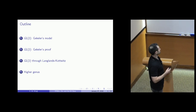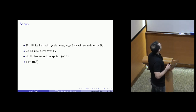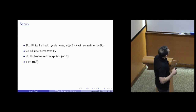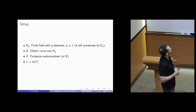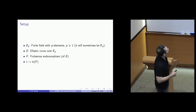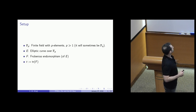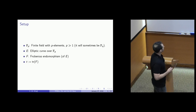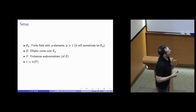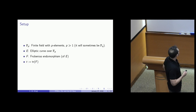The setup: I'll be working over a finite field with P elements, just for expository purposes. Sometimes it will be F_Q because I mistype P to Q. E will denote an elliptic curve over F_P or F_Q. F will be the Frobenius endomorphism of E, and T will be the trace of F. Everything valid over F_P is valid over F_Q.